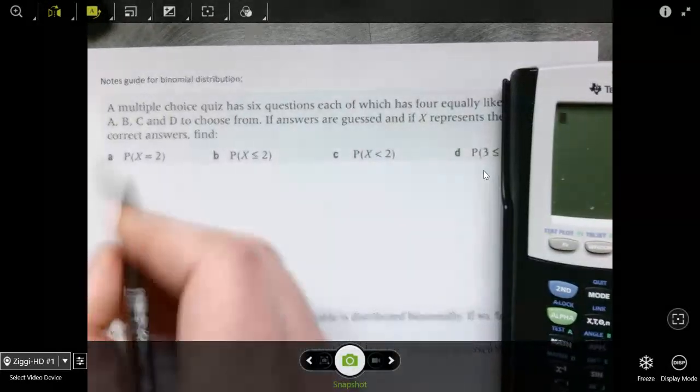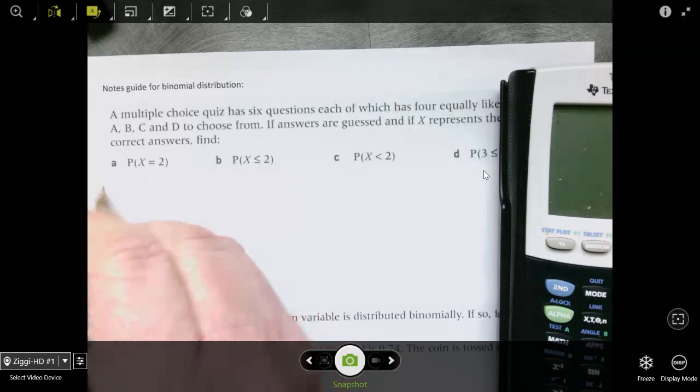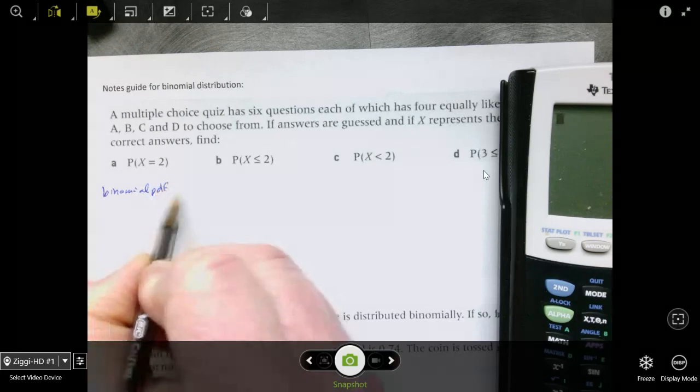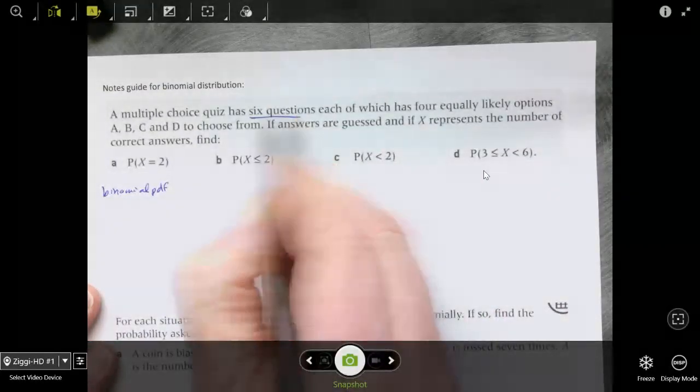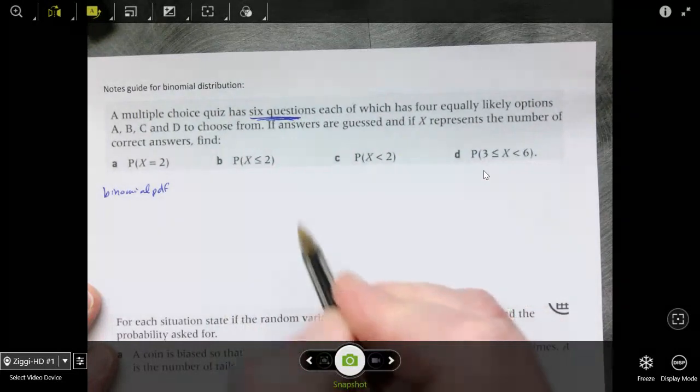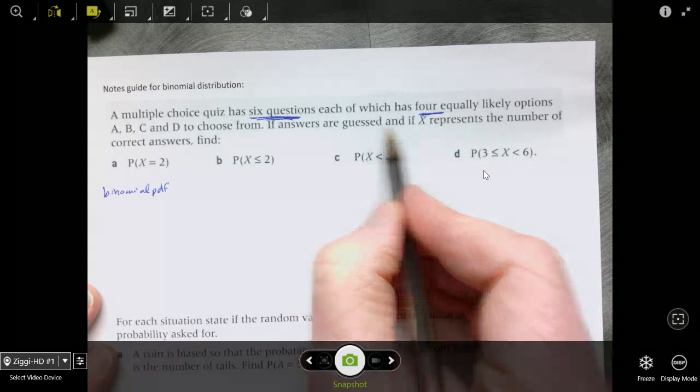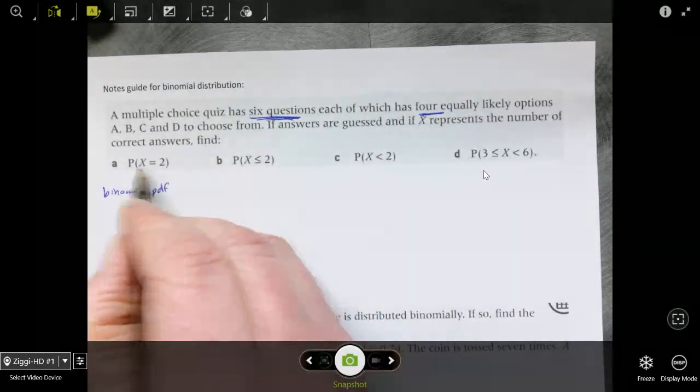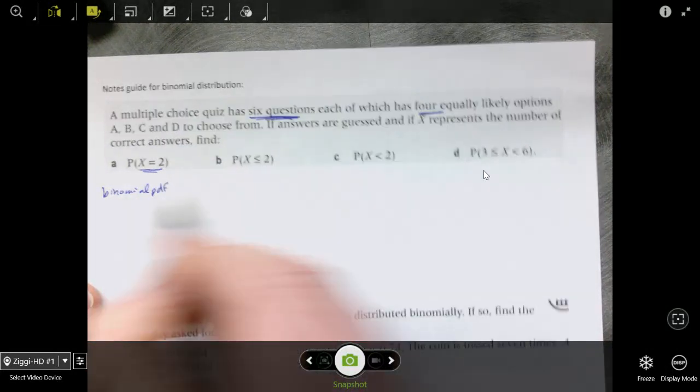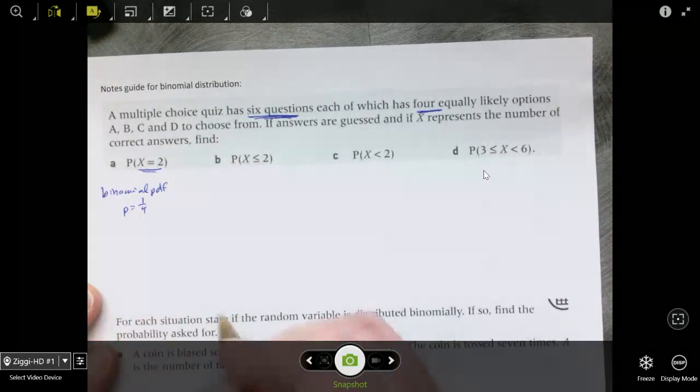So the probability that x equals 2. So again, it's an equal. So we're going to use binomial PDF, probability density function. And we need to know what we have here. So we have 6 questions. So we're going to do 6 trials. And there's 4 equally likely options. If the answers are guessed and x represents the number of correct answers, find the probability that you get 2 right.